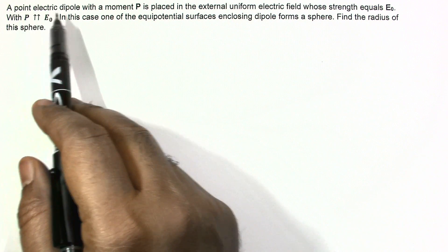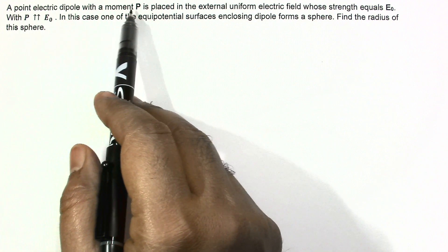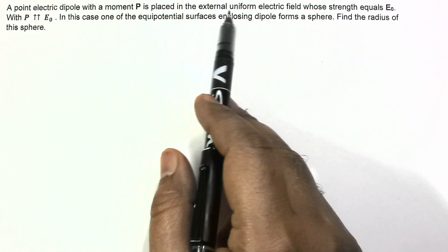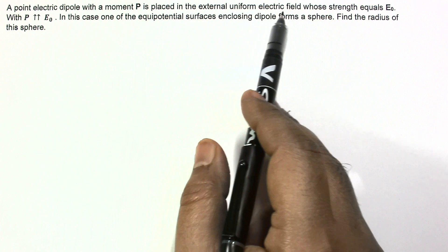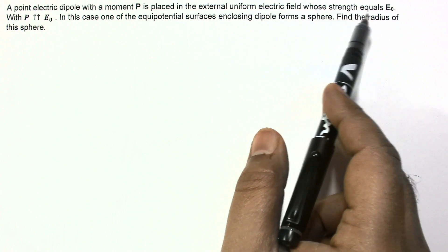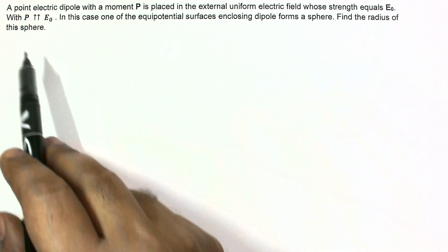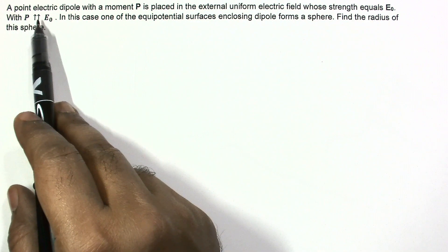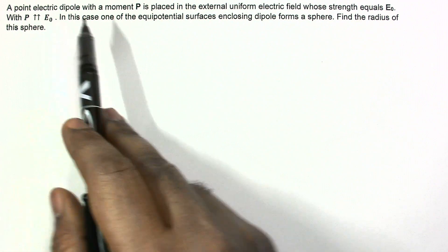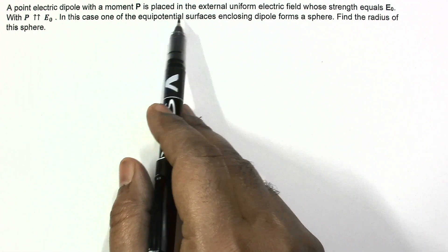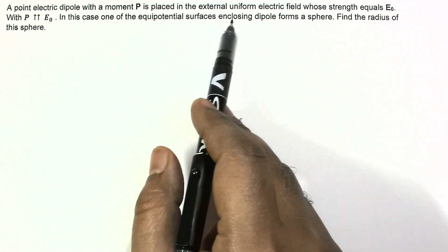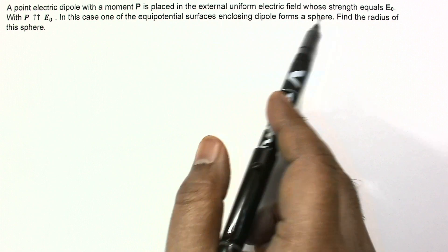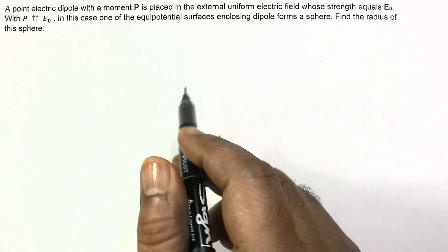In this question, a point electric dipole with a dipole moment P is placed in an external uniform electric field whose strength equals E₀, with P parallel to E₀. In this case, one of the equipotential surfaces enclosing the dipole forms a sphere. Find the radius of this sphere.